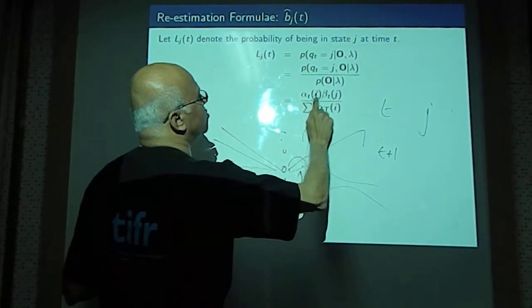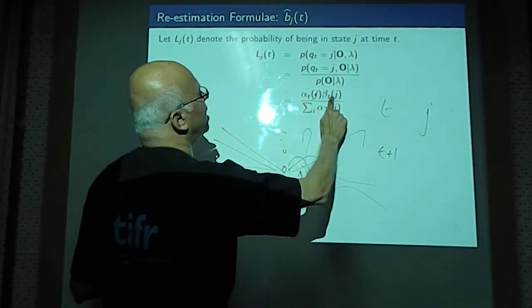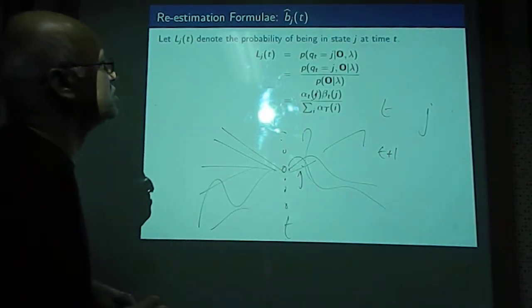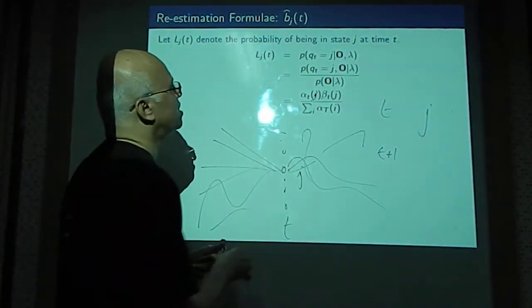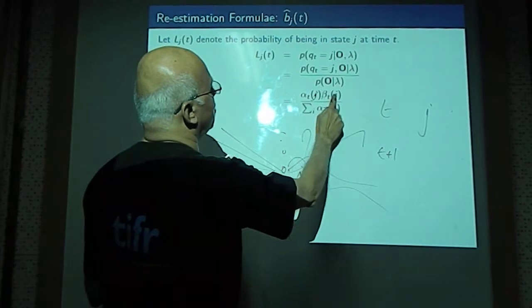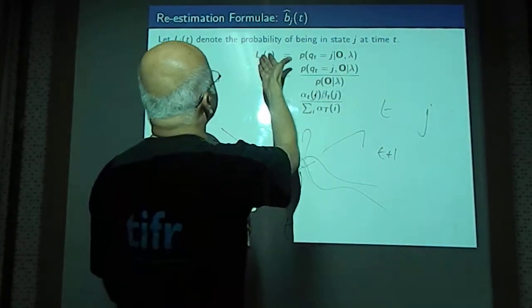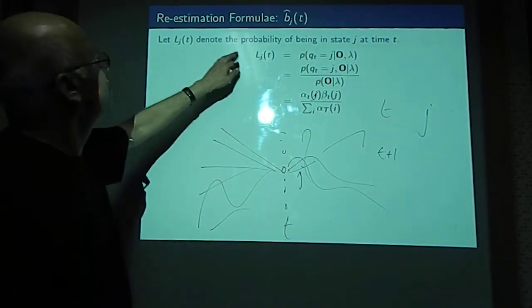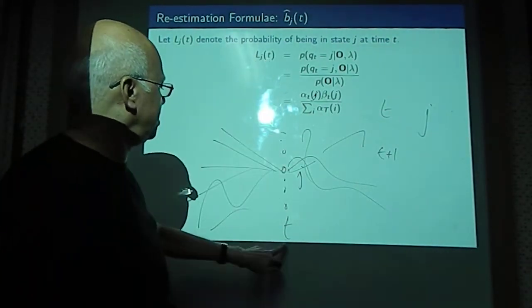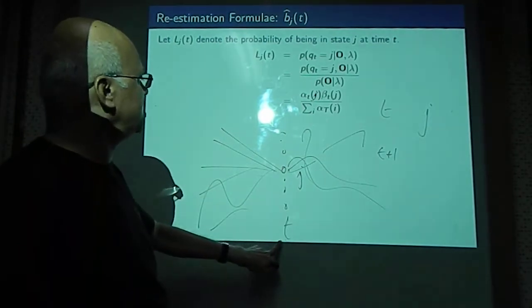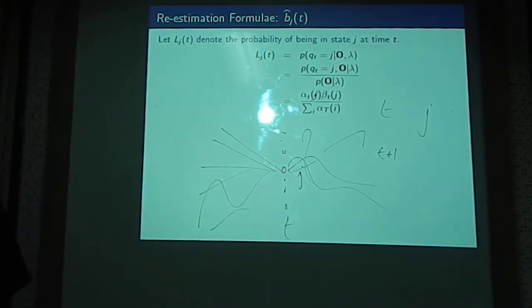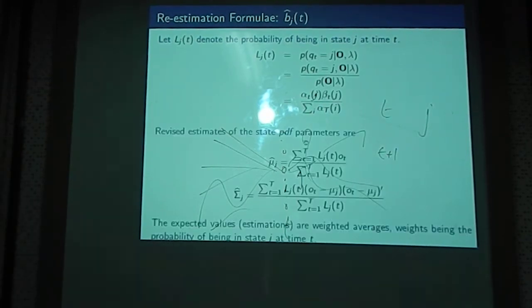So that is given by the product of alpha and beta at the same time in state j. This should be j. So this ratio, we know alpha, we know beta, we know alpha_t. So this also can be calculated. The likelihood that at time instant t, the O_t is emitted by the j state. That is computable as shown in this expression.